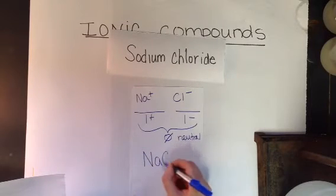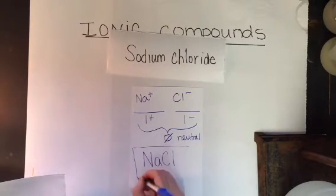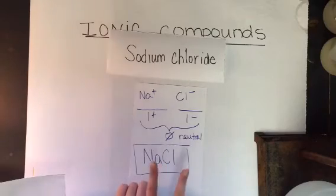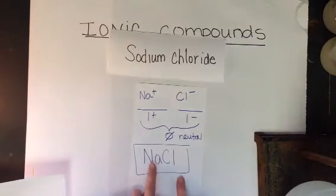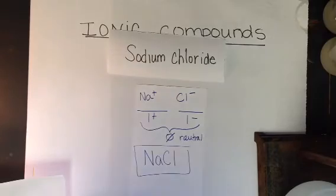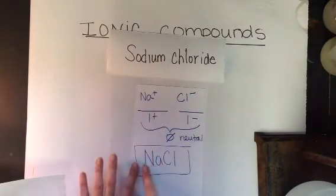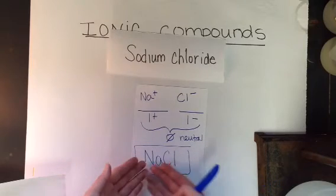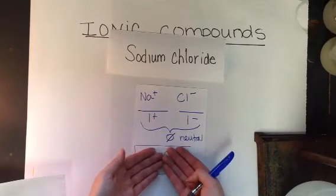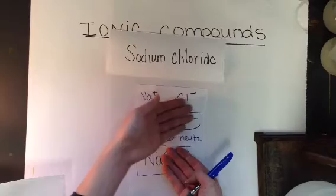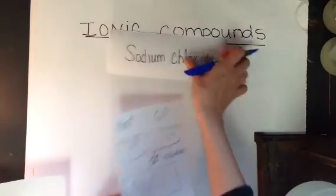So, how do I represent that? One Na for one Cl. There you go. No ones are written. That would be wrong. But there is one of each. We just don't write one. It is assumed. Okay. Notice there's no charges. Our formula never tells us charges. Our formula tells us how many of each we needed to neutralize it. That's what our formula tells us.